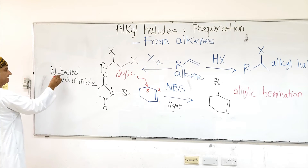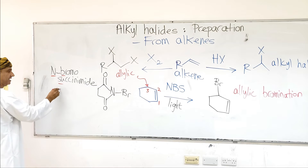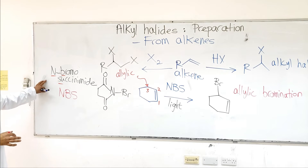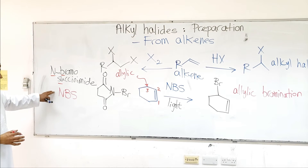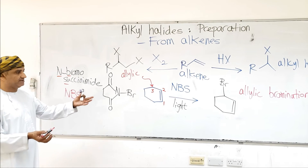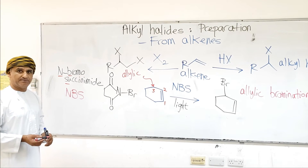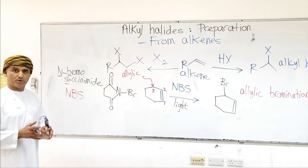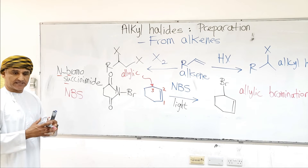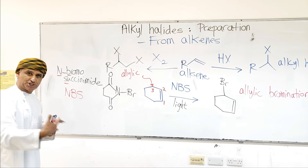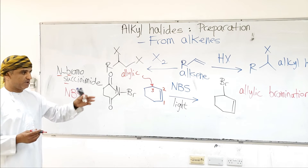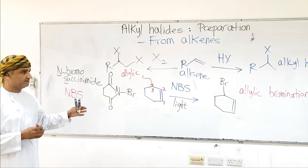N-bromosuccinimide is abbreviated as NBS. The first step in this reaction is breakage of the N-bromosuccinimide to form a succinimide radical and a bromine radical. The reaction is then initiated through propagation steps until eventually bromocyclohexene is obtained. This is allylic bromination.